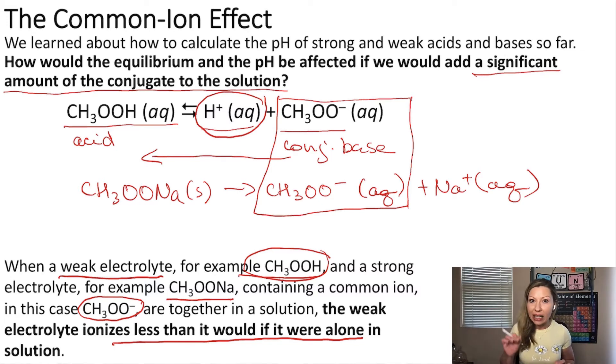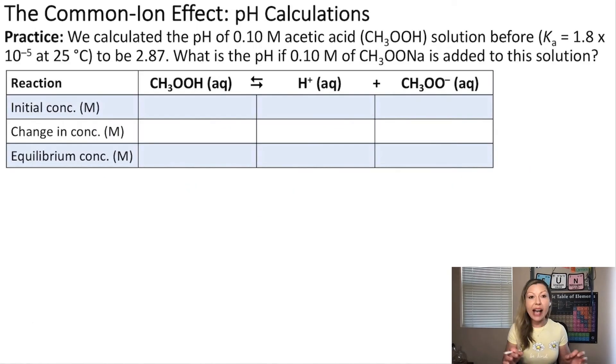Now let's take a look at an example. We actually calculated the pH in a previous video of a 0.10 M acetic acid solution, and we got 2.87 as the pH. Now let's try to figure out what is the pH if I add to this 0.10 M acetic acid solution